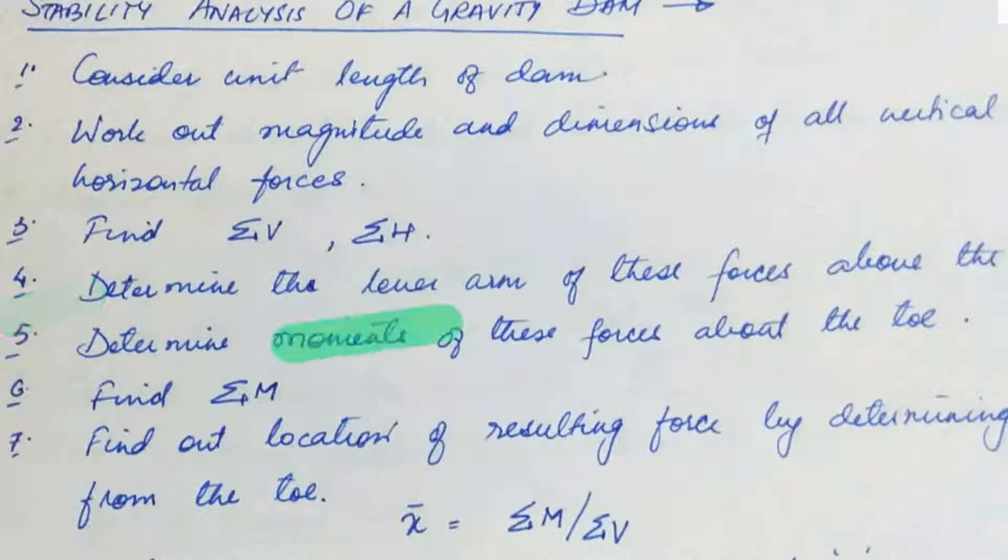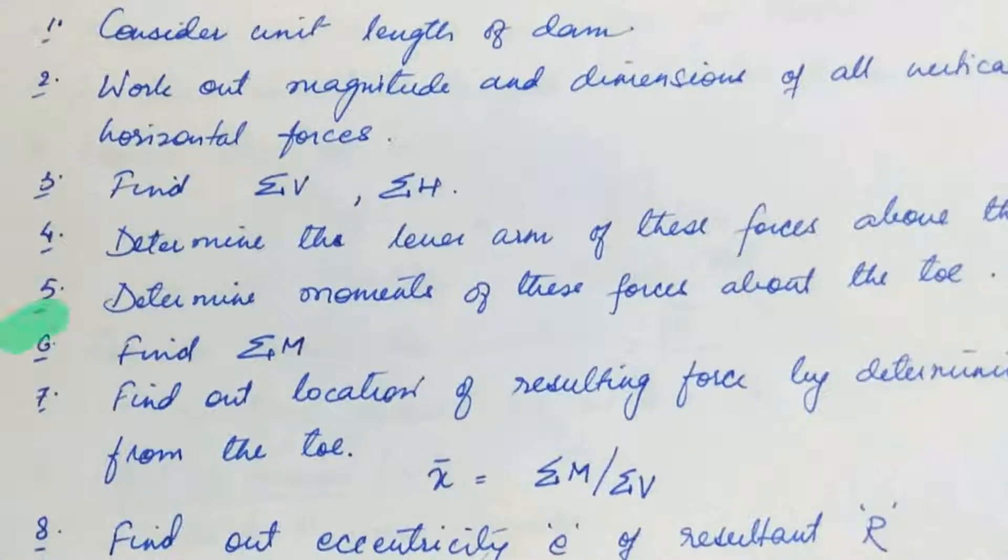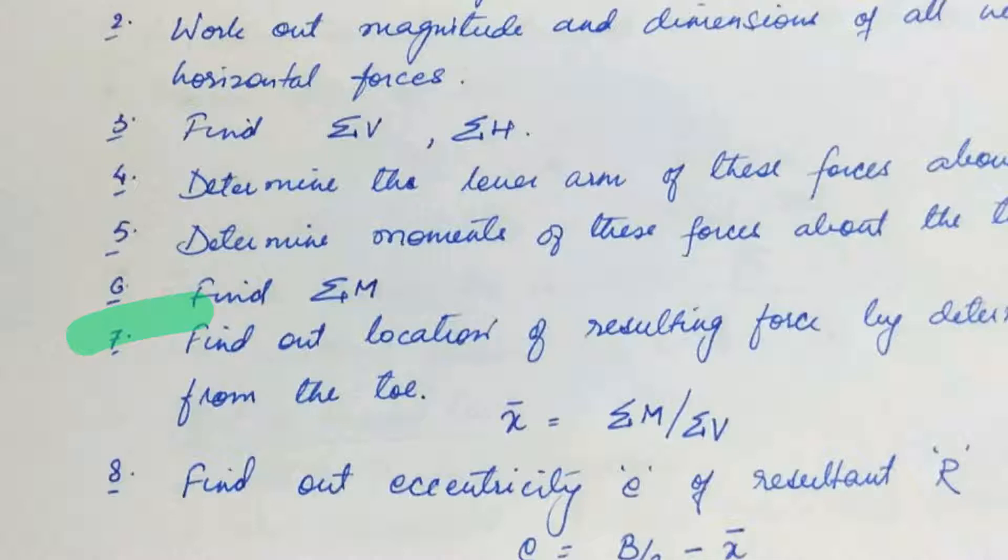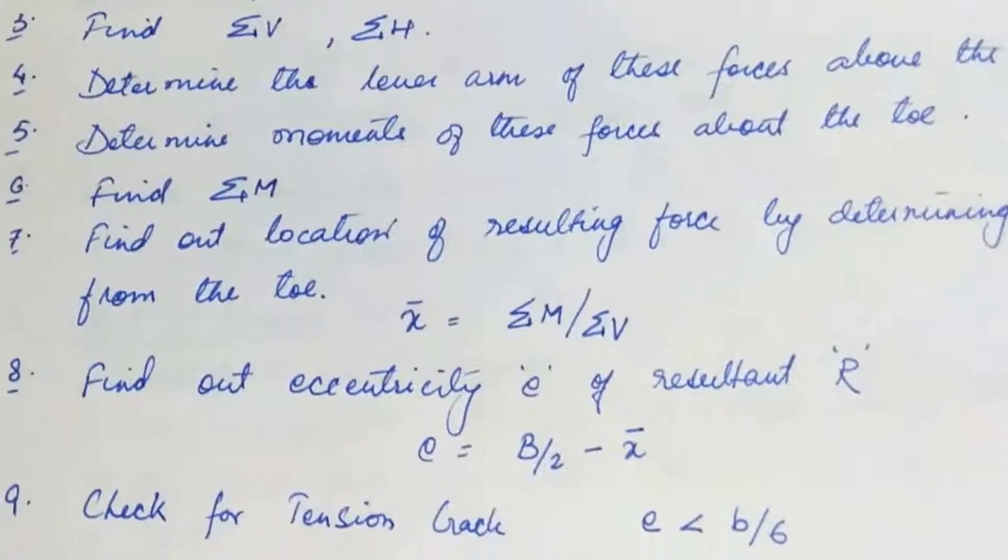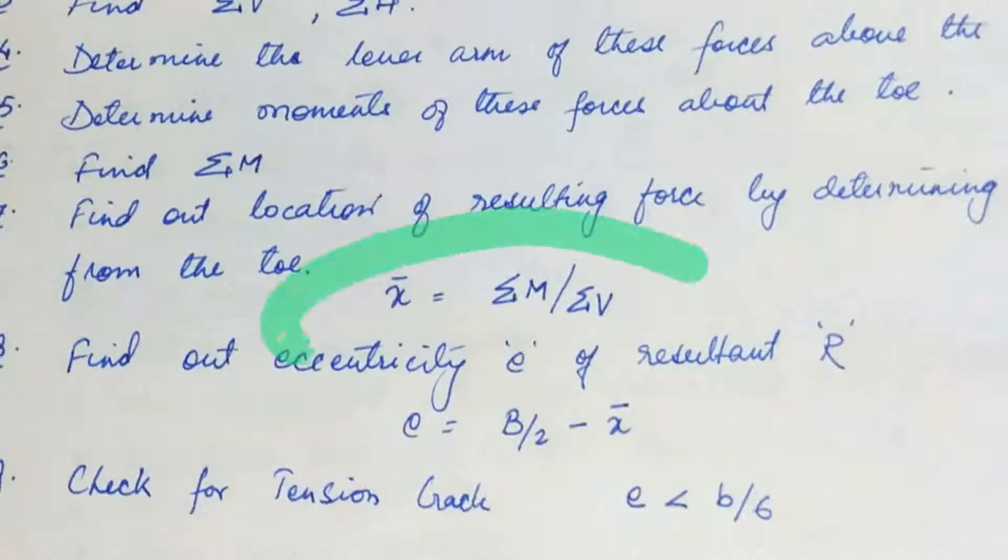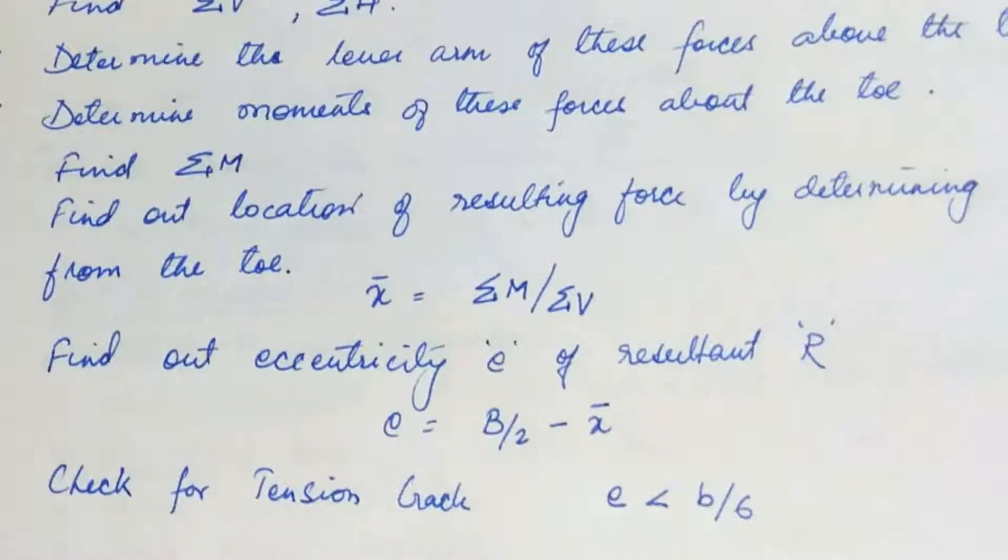Fifth step, determine the movements of these forces above the toe. Next step, find out the location of resulting force by determining its distance from the toe, which can be calculated by x bar is equal to sigma m upon sigma v. Next step, find out eccentricity e of the resultant r. E can be found out by e is equal to d by 2 minus x bar.